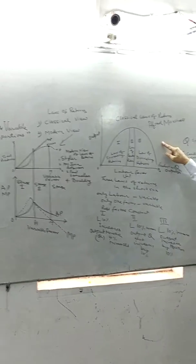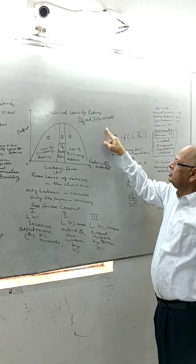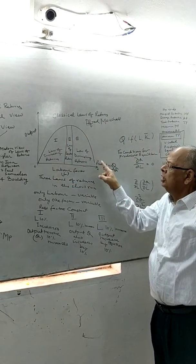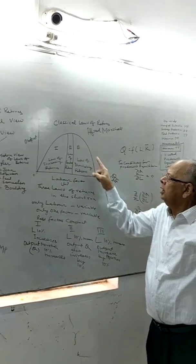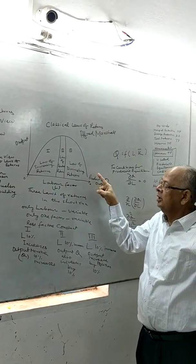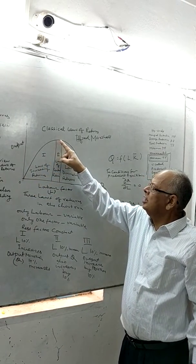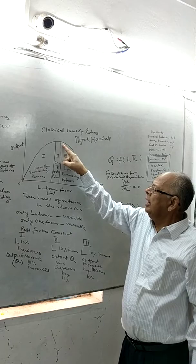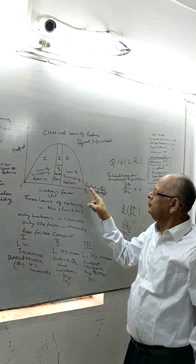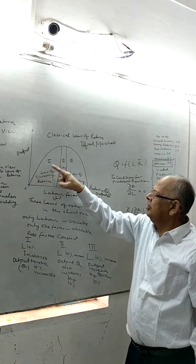The production curve is an inverted U-shape — it rises, reaches a maximum, remains constant for a while, and thereafter decreases. This inverted U-shape represents the classical laws of returns developed by Alfred Marshall.